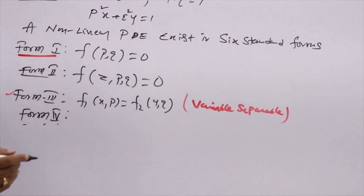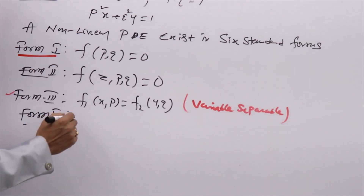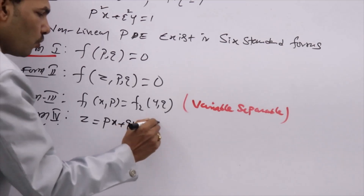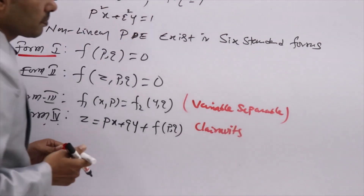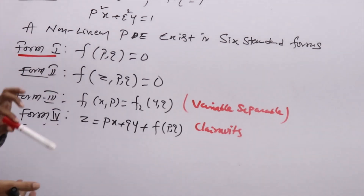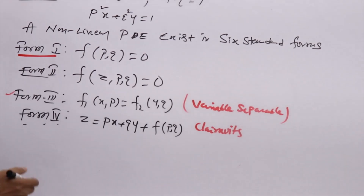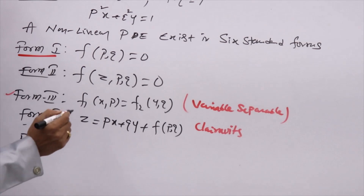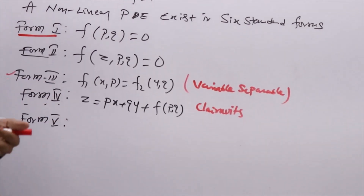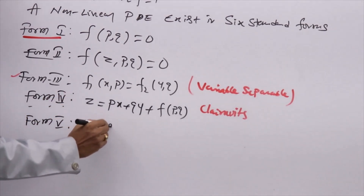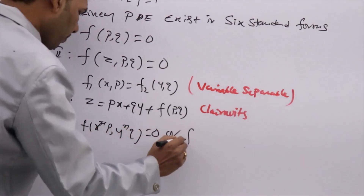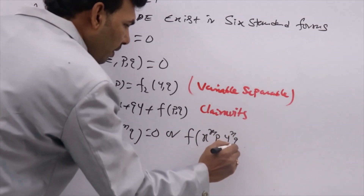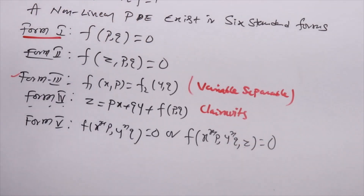Form 4 is called Clairaut's form: z = px + qy + f(p, q). Form 5 involves: f(x^m · p, y^m · q) = 0, or forms like x²p², y²q², z²q³, or f(x^m · p, y^m · q, z) = 0.